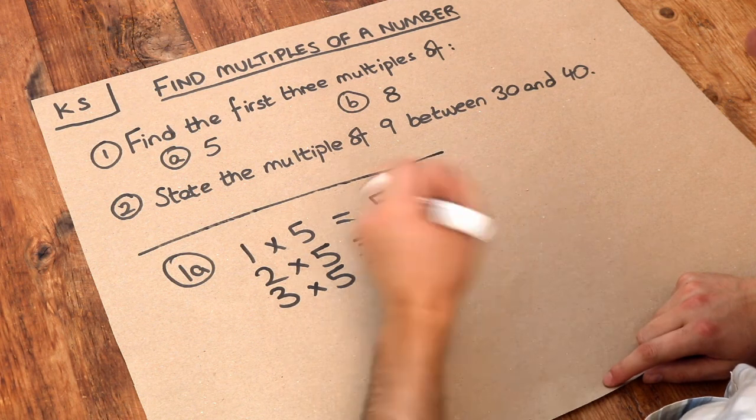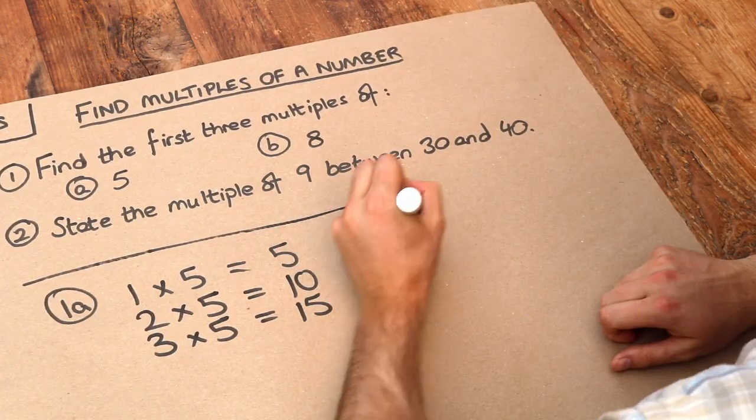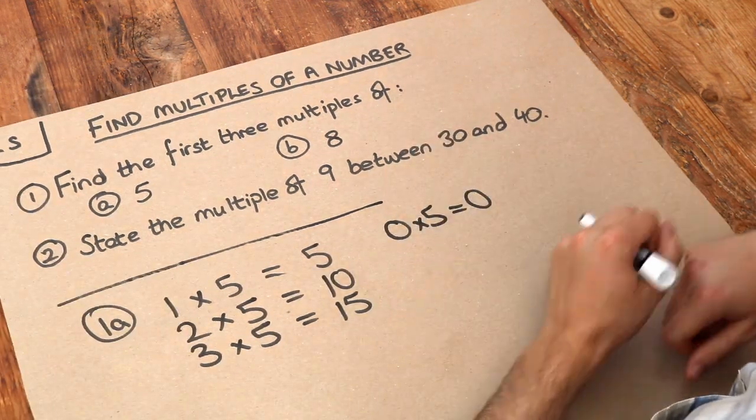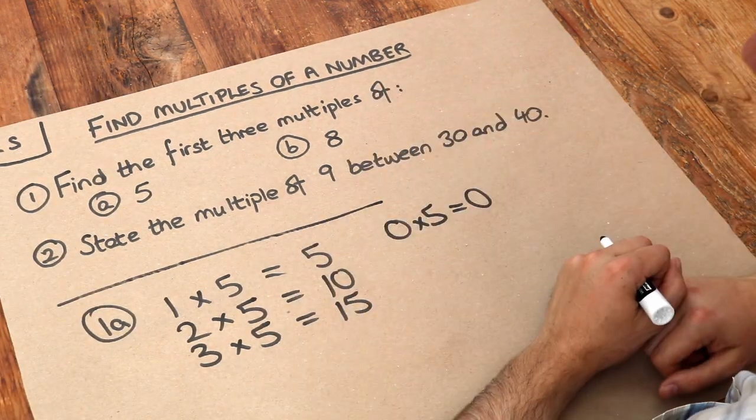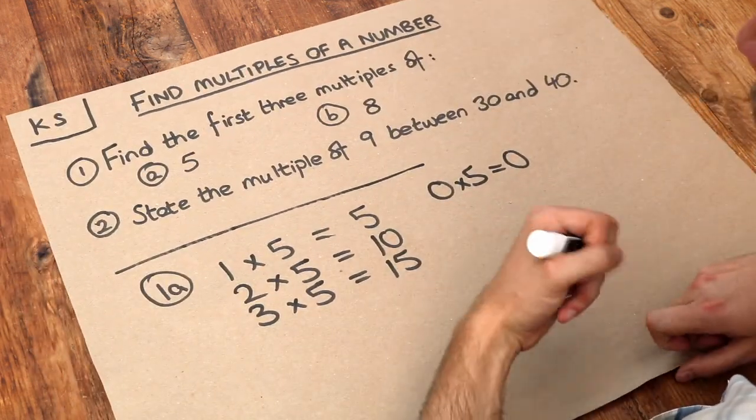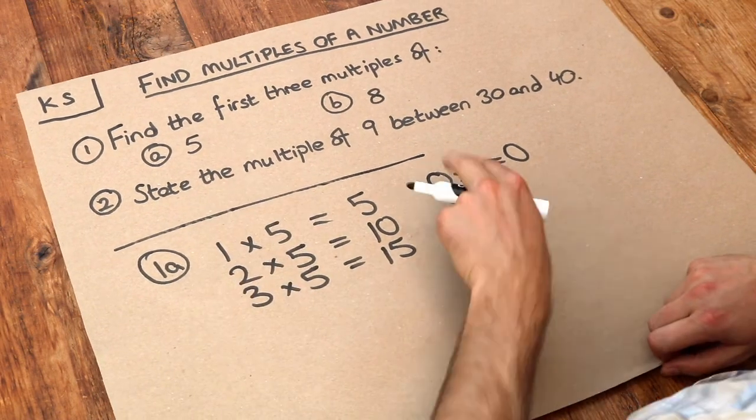We could also consider zero as a multiple of five. When we do zero times five, that is zero. Indeed, zero is a multiple of any number because we have zero lots of it. In general, a multiple of a number is when we have a certain number of lots of it. That could be one lot, more than one lot, or even zero lots of it.